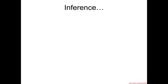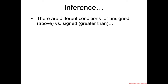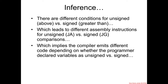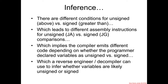We can start to develop some inference from this tiny change. If there are different conditions for unsigned versus signed, and that leads to different assembly — such as 'jump above' versus 'jump greater than' — this implies the compiler emits different code depending on whether the programmer declared variables as unsigned or signed. Ultimately, a reverse engineer or decompiler can use those different assembly instructions to infer whether variables were likely unsigned or signed in the original high-level language.